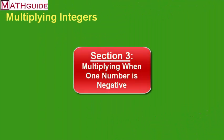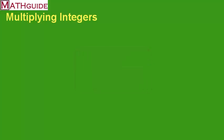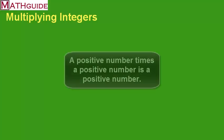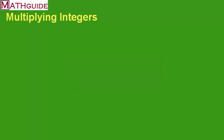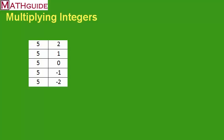In section one, we found out that when you multiply a positive number times a positive number, you get a positive number. We never dealt with negative numbers, so we didn't have to concern ourselves with that. So in this section, I'd like to talk about what happens when you multiply a positive number times a negative number. I have a table that will help explain this. You'll notice that I have the value five in the first column, and some changing values in the second column — starting positive, getting smaller, then becoming negative.